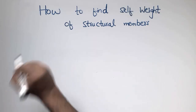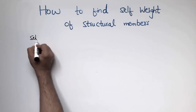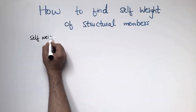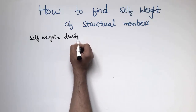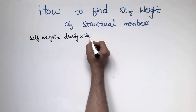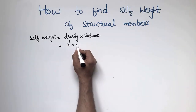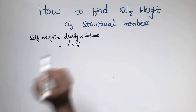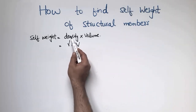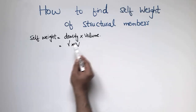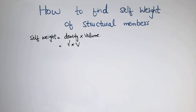The self-weight of any structural member can be calculated easily by this formula: self-weight is equal to the density multiplied by the volume of the structural member. In short, we can write it as gamma into volume. If you know the density of the material used in your structural member and the volume of your structural member, then multiplying these two gives you the self-weight.